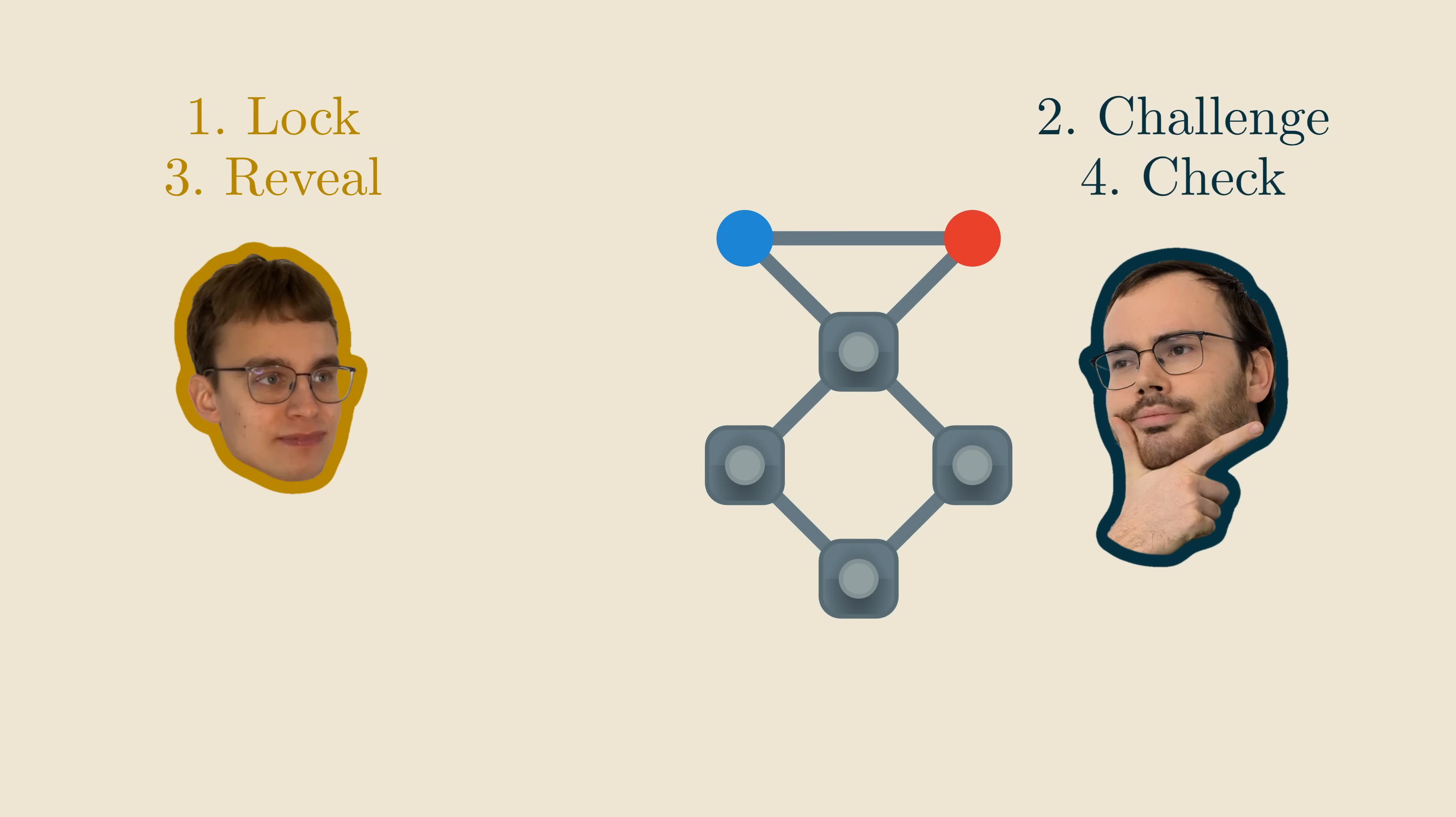Okay, let's try to use the idea of revealing an edge to build a zero-knowledge proof. Here's what we do. First, I write down my solution and lock each node in a separate safe box. Once this is done, I give the locked graph to the verifier. Next, I'll let the verifier choose any of the edges of my graph. So, Vasek, which edge do you want to look at? Hmm, let's see this one. Now I reveal the colors of its two nodes. But importantly, I won't reveal anything else. Okay, and as the final step, I check that the two colors are different. Which they are, so all's good. And that's it. That's the end of our simple protocol.